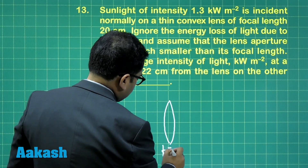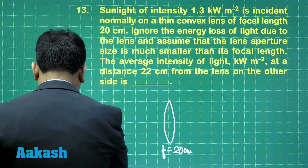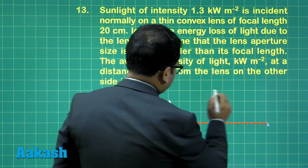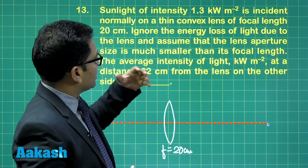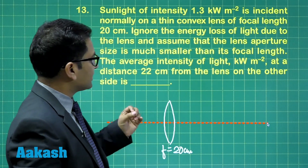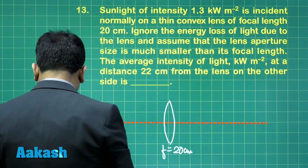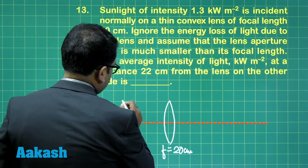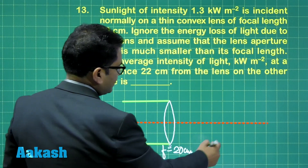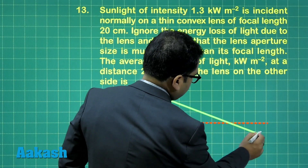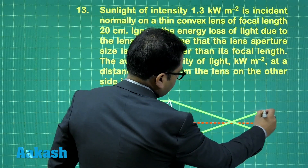The lens has a focal length of 20 centimeter. Let's draw the figure here. This can be taken as the principal axis. The focal length is 20 centimeter, and we need to find the average intensity at a distance 22 centimeter. If we just see what sort of ray is going to pass through this — the idea is something like this, here and here. After 20 centimeter, the light would be converging, and these are the extreme rays that you could consider.